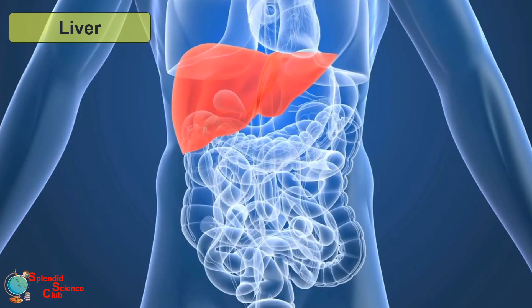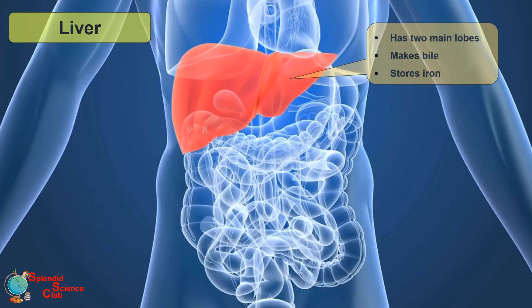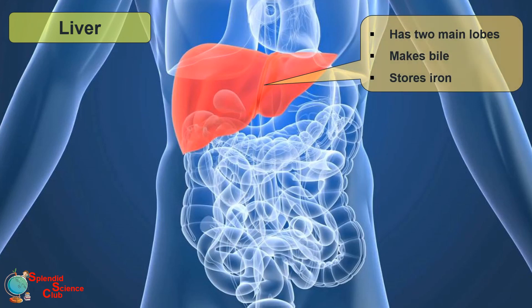The liver is an organ which produces bile, which is another digestive juice. The liver has two lobes, and it performs many other functions in addition to producing bile.